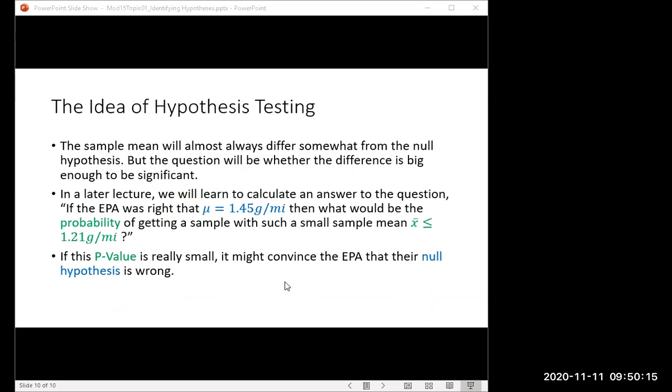And that's it. The idea of hypothesis testing is that when we say, the EPA says population mean is 1.45, we say our sample was smaller, they say you just got lucky, we need to be able to do a probability calculation so that we can respond to them. And they say, well, you say we just got lucky, but how lucky do you think we must have gotten? Because we'd have to be pretty darn lucky to get such a big difference. So if that probability, that p-value, is really small, then the EPA would say, okay, well, I guess you probably didn't get lucky. They might have to give up their null hypothesis. That's it.